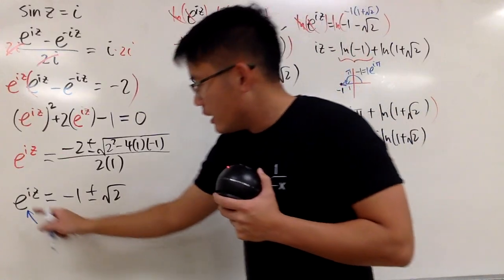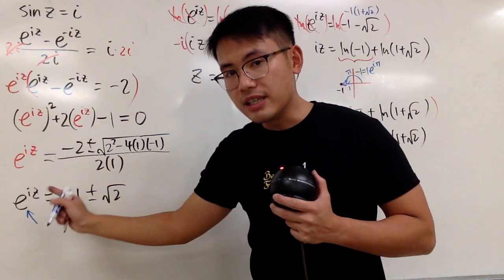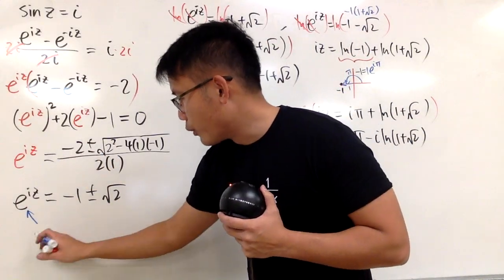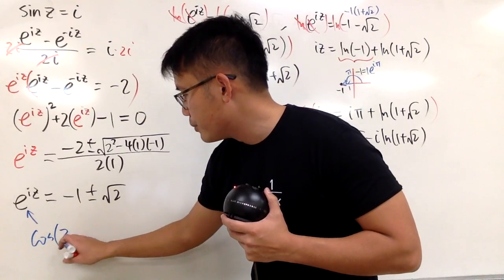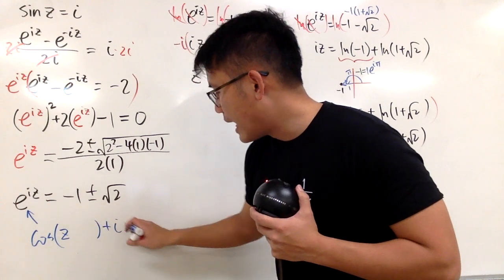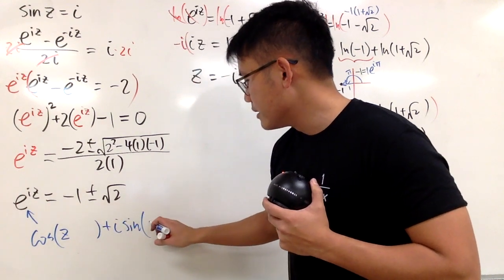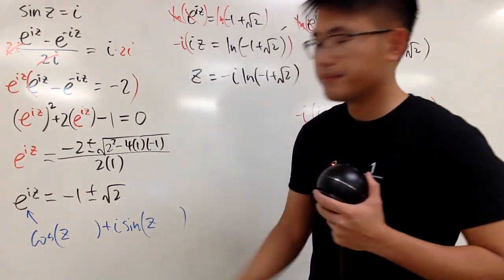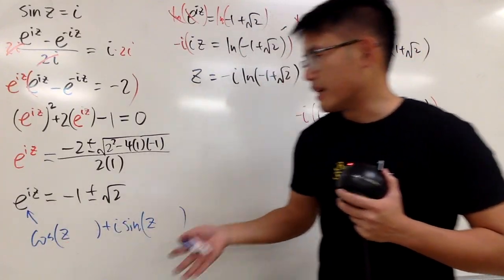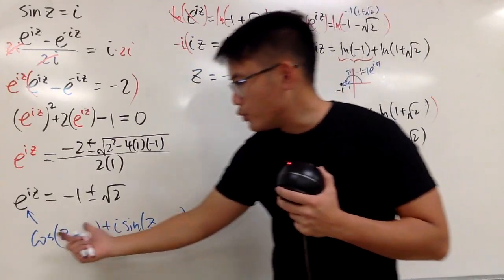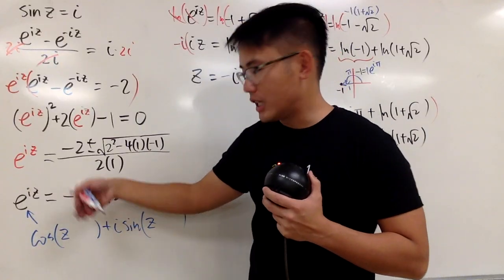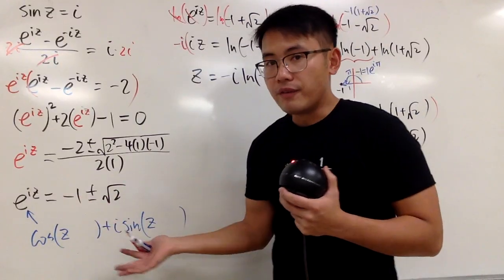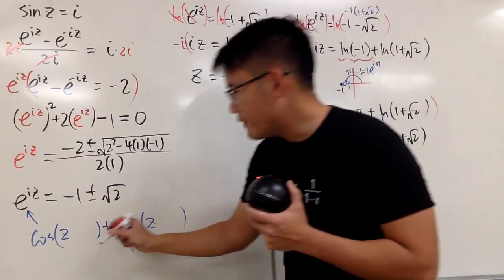e to the iz. To make sense of this, well, we have to use the Euler's formula, which is cosine of z, which is that input right here. And then we add i times sine z, like this. You can just think about the z as like the angle. Well, when you have cosine, you know we can just keep adding 2 pi, or keep subtracting 2 pi, the value is still the same. So it's for the sine.